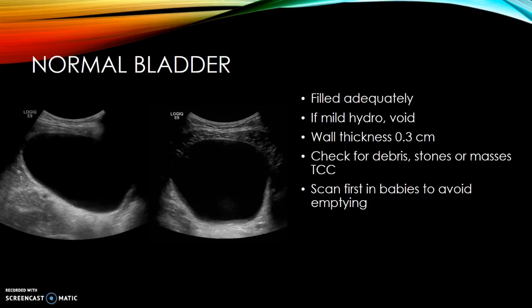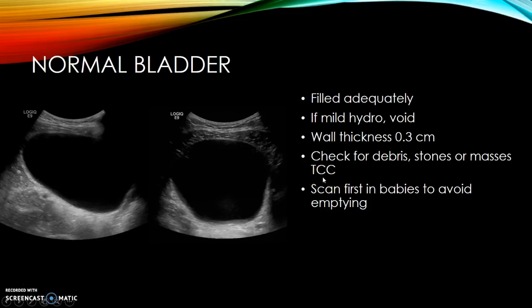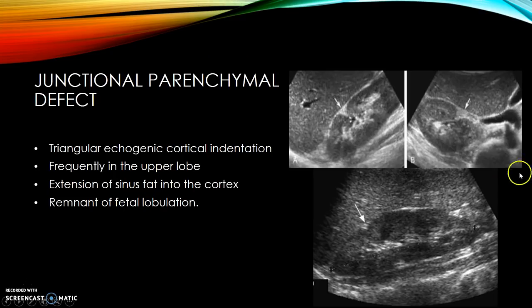The normal bladder when filled adequately can contain a good amount of urine. If a patient has a very full bladder with mild hydronephrosis or mild pelvicectasis, have them void a little and see if that resolves it. Normal bladder wall thickness is less than 3 millimeters when full. When scanning the bladder, check for debris, stones, and masses. The most common tumor of the ureters and bladder is transitional cell carcinoma. When scanning babies, scan the bladder first as they may void early.